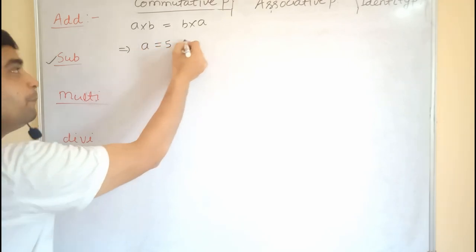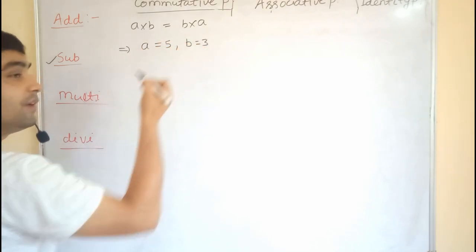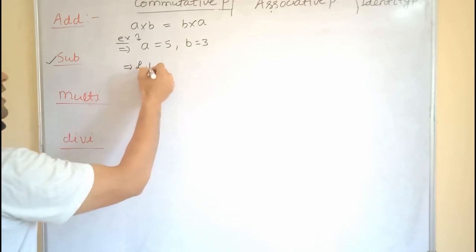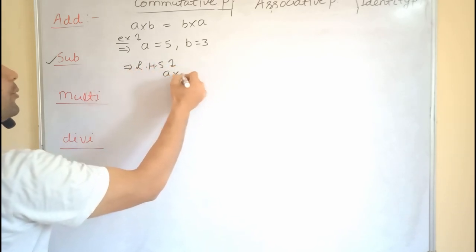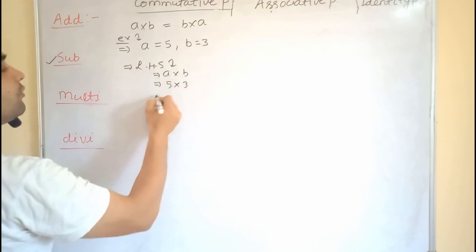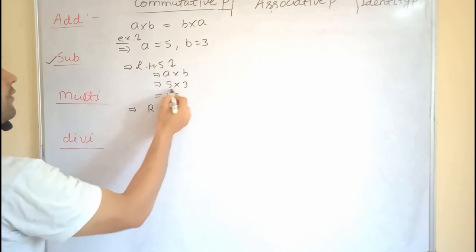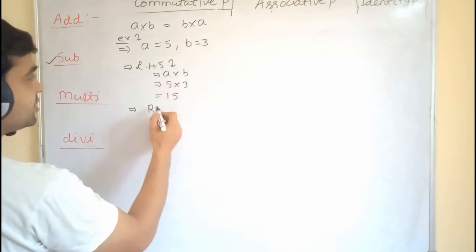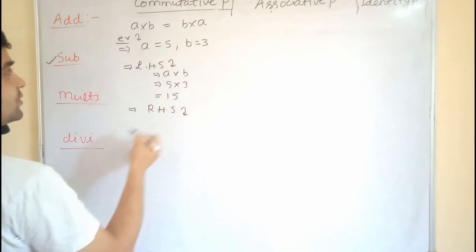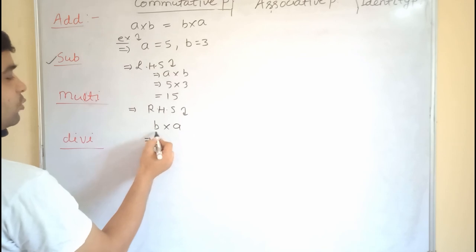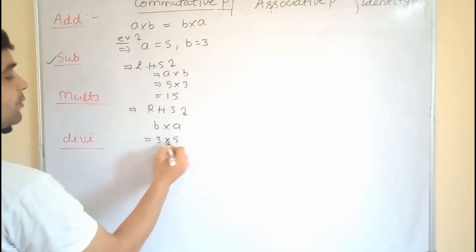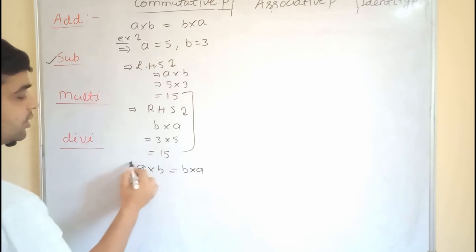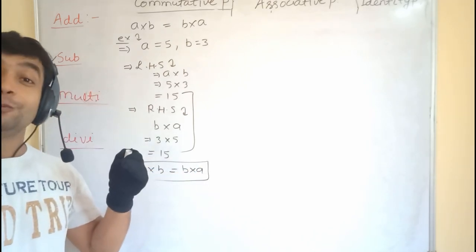We take the example: a is equal to 5, b is equal to 3. Now we solve LHS: a into b means 5 into 3, which gives 15. For RHS, b into a means 3 into 5, which is again 15. Both LHS and RHS are equal, so a into b is equal to b into a.